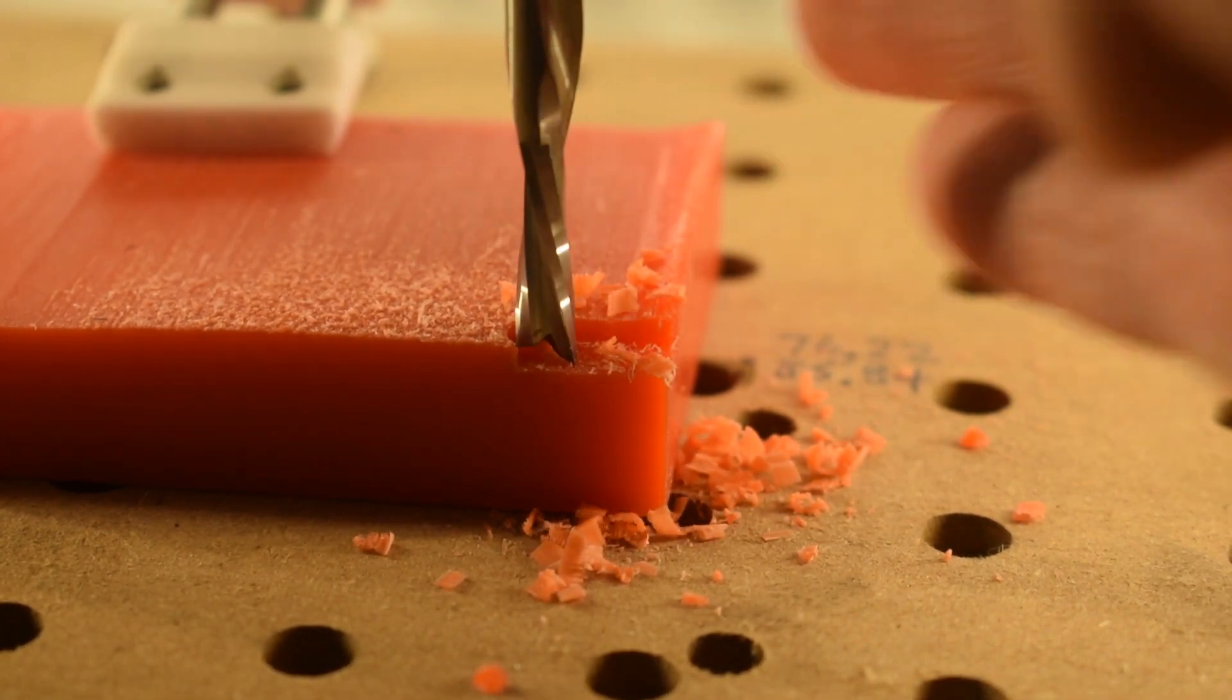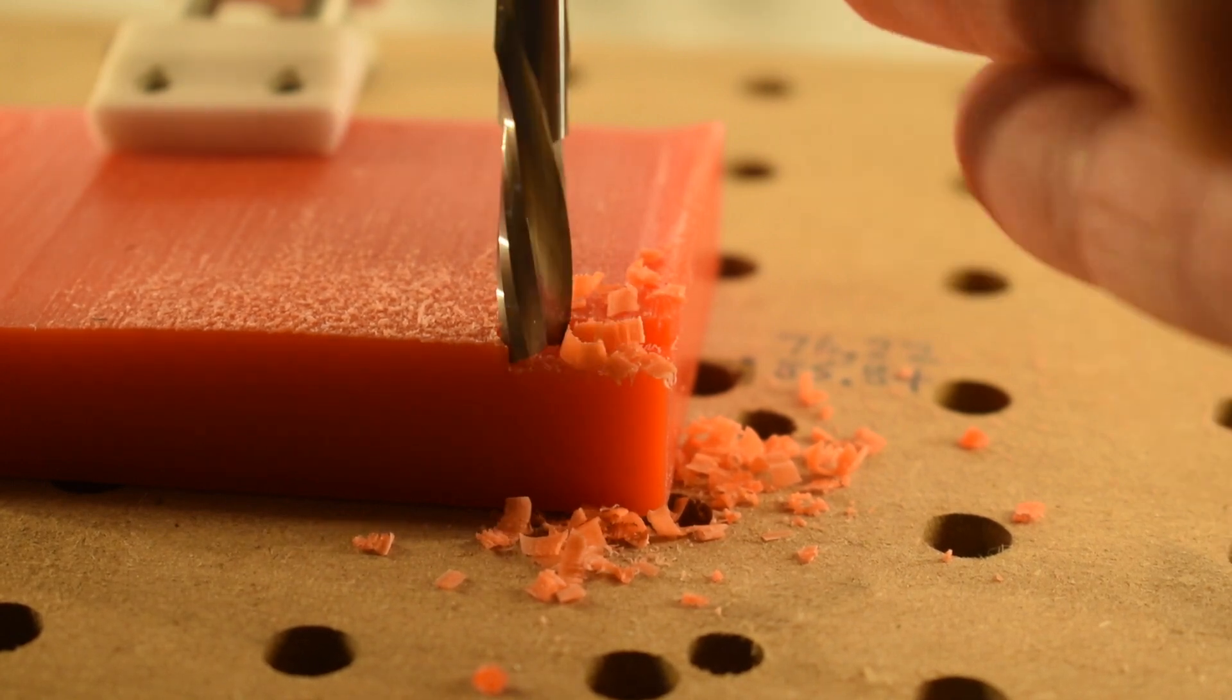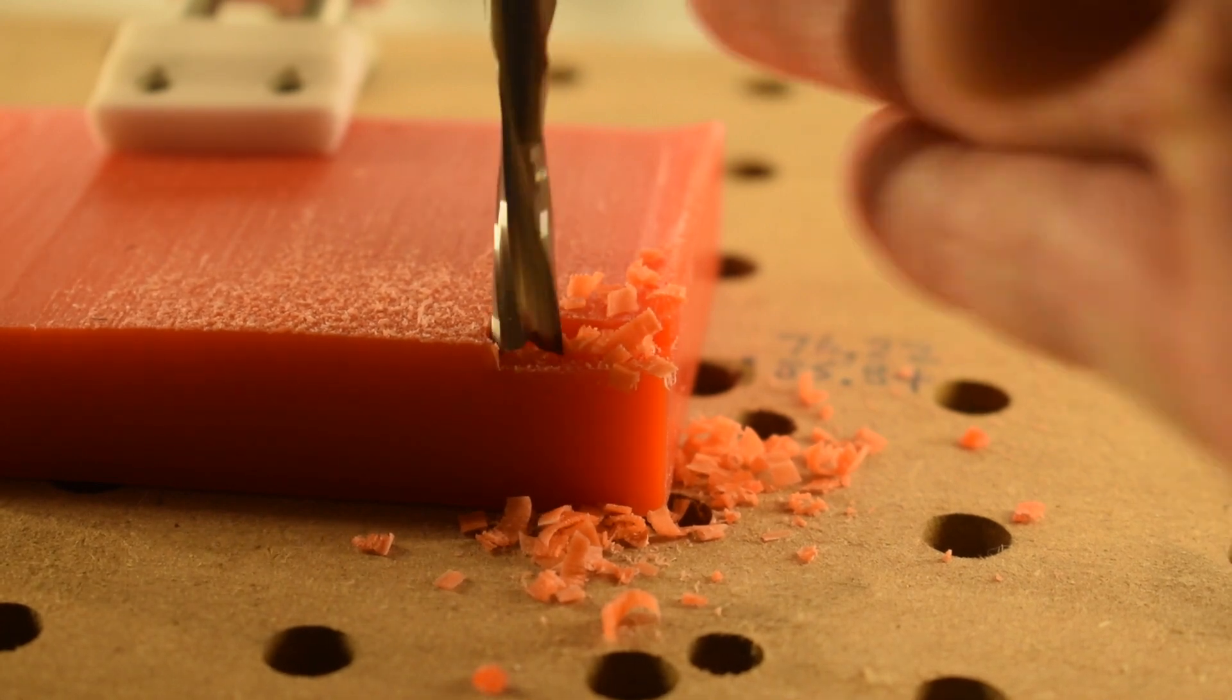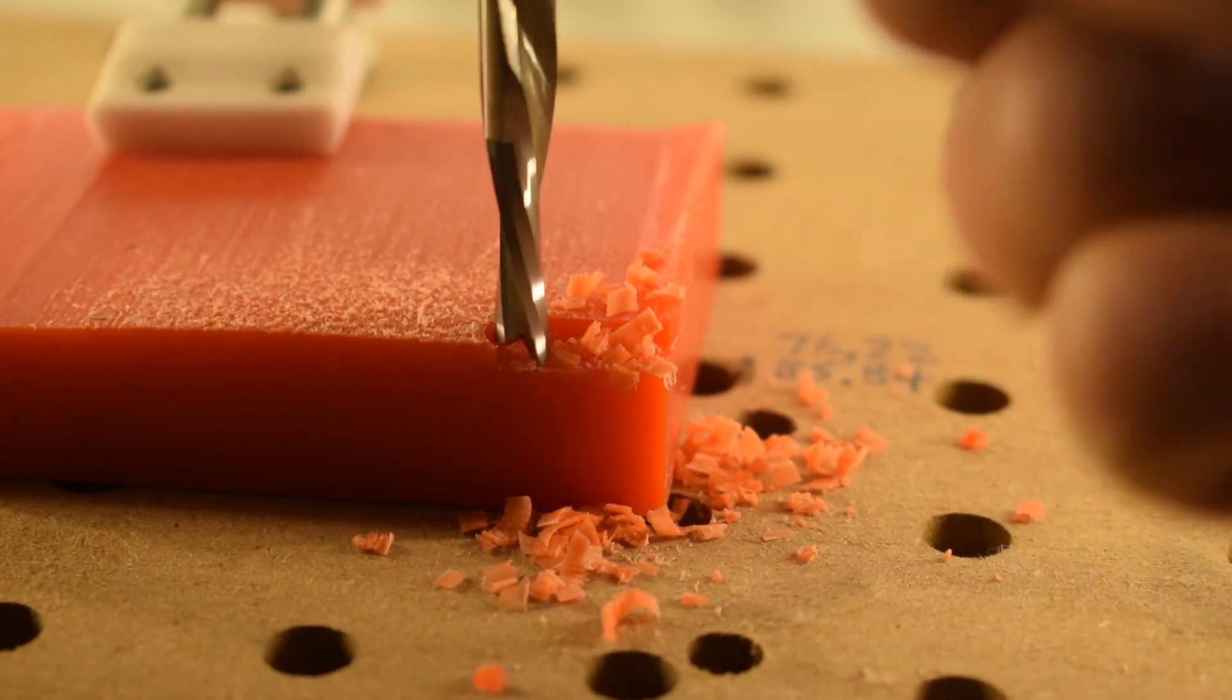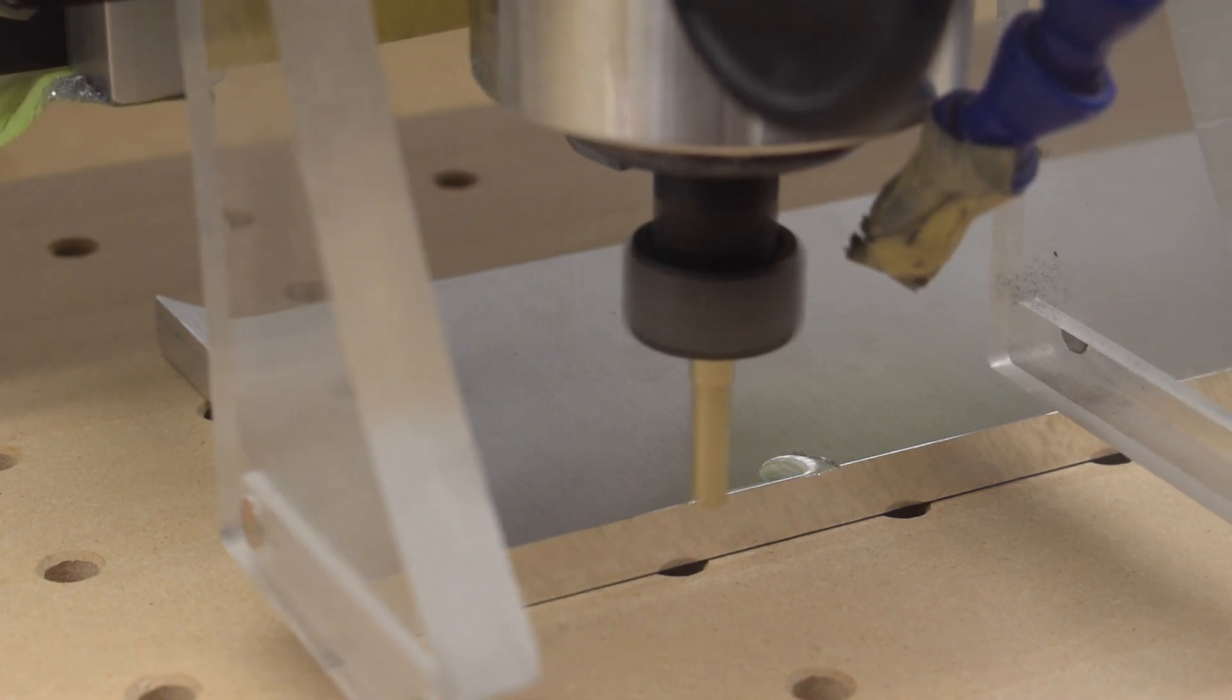If that cutter was a two flute, then the chip load would be 0.05 inches. Every revolution, the cutter still moves 0.1 inches into your stock, but since there are two cutting edges, each edge bites into half that amount of material. The more flutes you have, the smaller your chip load becomes for a given RPM and feed rate combo.